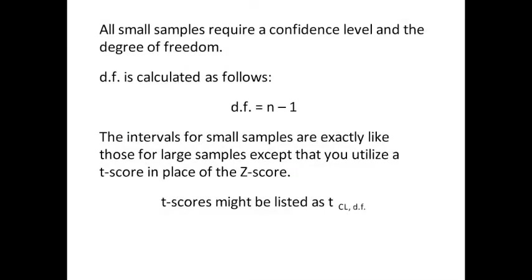All small samples require confidence level and the degrees of freedom. The degree of freedom is calculated as follows: df equals n minus 1. The intervals for small samples are exactly like those intervals for large samples, except that you utilize a t-score in the place of a z-score. T-scores might be listed as t confidence level comma degree of freedom, because in order to find a t-score, you have to have the confidence level and the degrees of freedom.